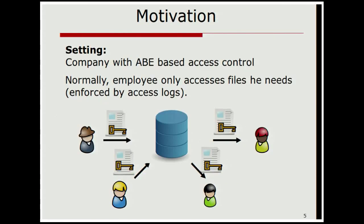The motivation: we have a company with a server using ABE for access control. The server only hosts encrypted files — ciphertexts encrypted using ABE. Users access it, but the server logs access, and other mechanisms incentivize the good employee to be careful. When he needs a particular file, he goes to the server, downloads that file, decrypts it, and makes use of it. He may have authority to access thousands of files, but only accesses what he actually needs. So there are many files he doesn't access.